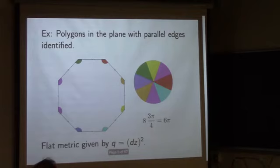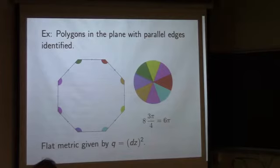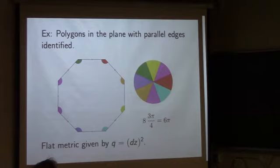Most importantly for this talk, you can specify a surface using polygons. If you take the octagon and identify opposite edges, you get a genus 2 surface. You may be familiar with this from a proof of the classification of surfaces. But I don't just want to think about this topologically — I also want to think about this as a metric object. The surface inherits a metric from the plane.